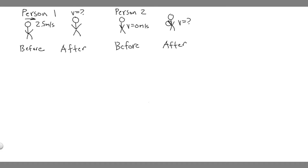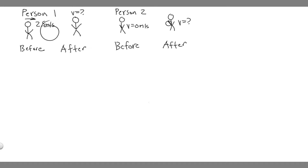So we have two people, and I split this into two parts: before and after. Before, we have person one moving at 2.5 meters per second, and then they're going to throw the snowball. After, we're trying to find their velocity. The other part is person two, who's not moving, and after person one throws the snowball, they're going to have the ball and start moving. Let's start with finding the velocity of person one.